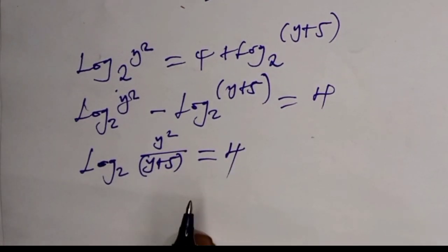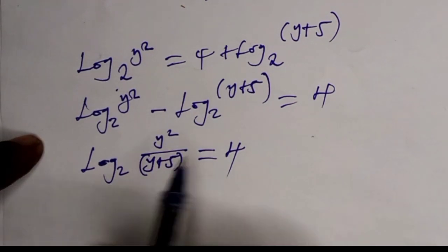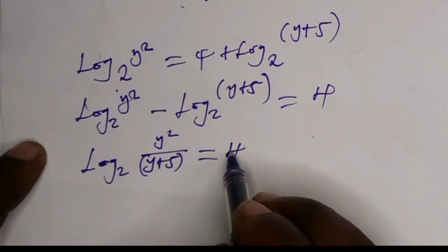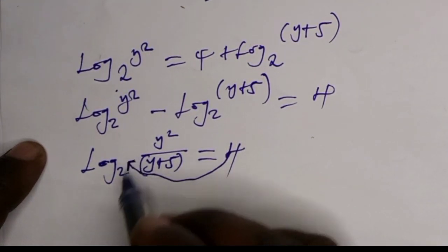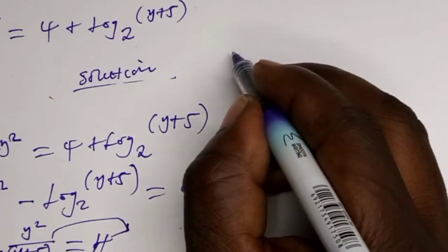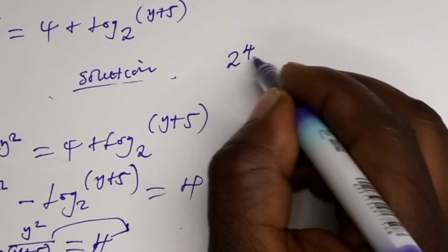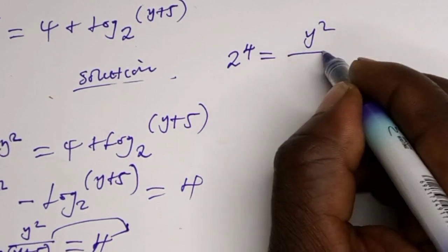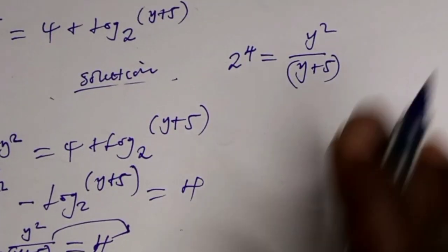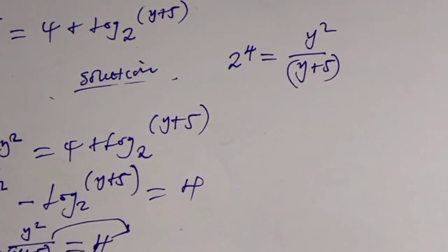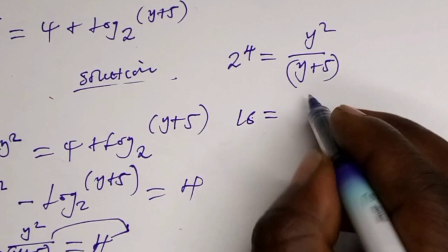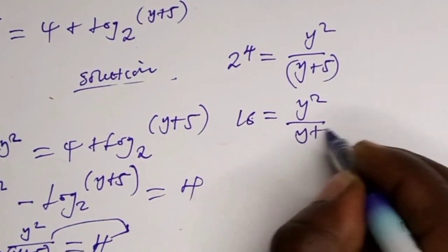There is also a rule which states we have to take this logarithm into exponential form, in which this 4 becomes the power and the base 2 goes to this side. So 2 to the power 4 is equals to y squared over y plus 5. Now 2 to the power 4 is 16, which is equals to y squared over y plus 5.